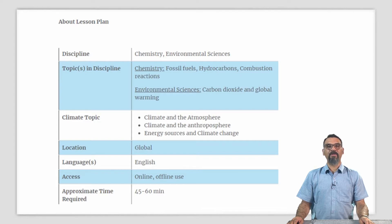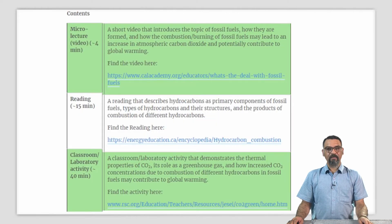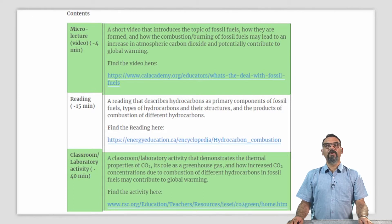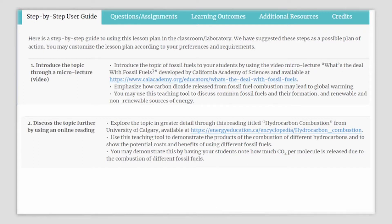The approximate time required for your students in this case is between 45 and 60 minutes. This lesson plan includes a very short video micro lecture, about 4 minutes in length, that introduces the topics of fossil fuels, how they are formed, and how the combustion of fossil fuels may lead to an increase in atmospheric CO2 and potentially contribute to climate change. A reading that describes hydrocarbons as a primary component of fossil fuels, the different types of hydrocarbons, and the products of their combustion. A classroom or lab activity that demonstrates to your students the thermal properties of CO2, its role as a greenhouse gas, and how increased CO2 concentrations due to the combustion of different hydrocarbons in fossil fuels may contribute to global warming.